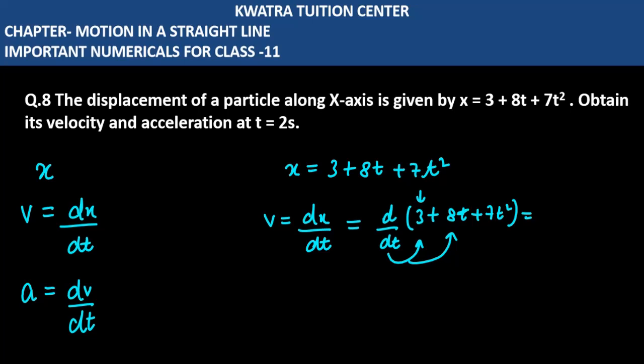We know that 8t. Now we can do power. So if the power has gone, what will happen? 8 into 1 is 8. Now t ki power is 0, which is 1. So t ki power is 0, which is 1. So we know that 8 only.